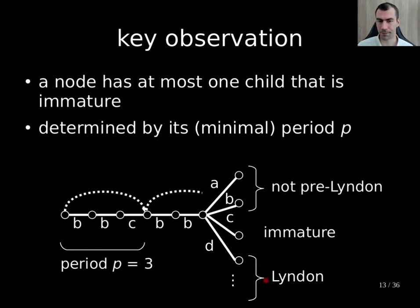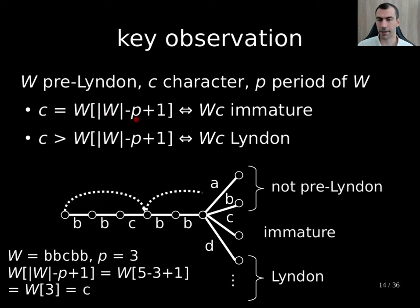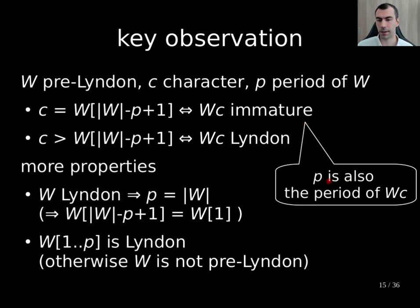To formalize that: for this subsequence, we take its length minus the period plus one. In this example, what we look at is the character 'c', because the period is three — this gives us the third character of w. Now, if the next character we append equals this, then after appending we get an immature subsequence. If this next character is larger, then it becomes Lyndon. Another property is that if it's immature, then we inherit from w its period. For w being Lyndon, this means the period equals the length of w itself, meaning we compare with the first character. Finally, the prefix up to the minimal period p is always Lyndon, because w is pre-Lyndon.